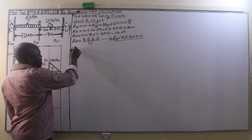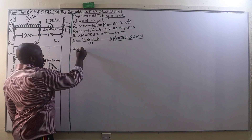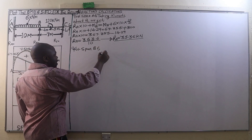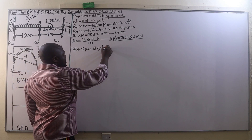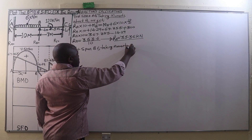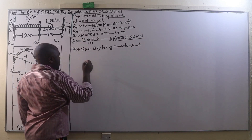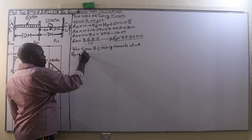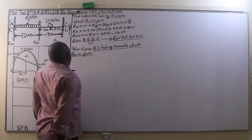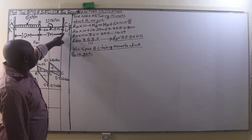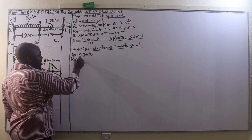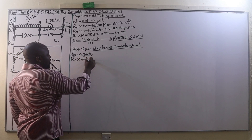From there, we go to the span BC, taking moments about B. We are going to have RC times the distance from C to B, which is 7 meters. Therefore, RC times 7 — that is an anticlockwise moment.